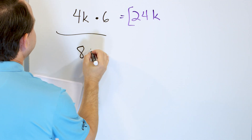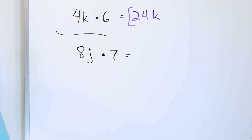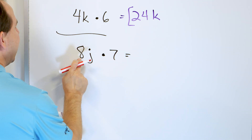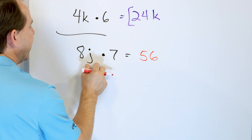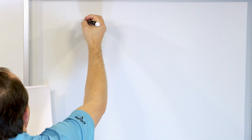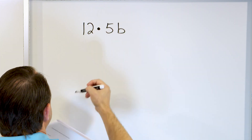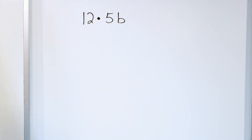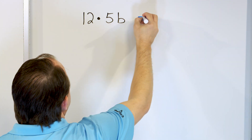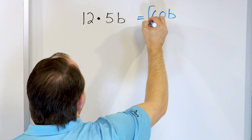Let's do a couple more. 8j times 7, or 8 jelly beans times 7. I start out with 8 jelly beans and multiply that amount by 7. So 8 times 7 is 56, and then J for jelly beans: 56J. What about 12 times 5b, or 5 beds? I have 5 beds in my hotel, but multiply that amount by 12. 12 times 5 is 60, and I still have B for beds, so the answer is 60B.